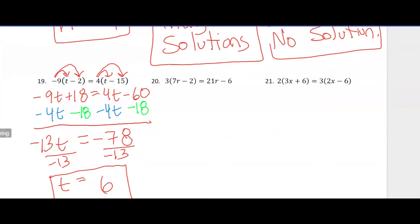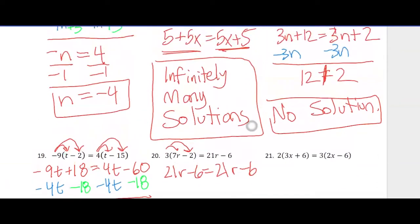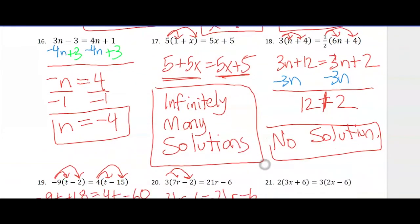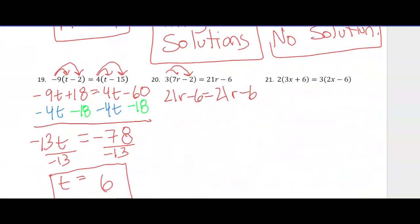Let's do number 20. I'm going to distribute the 3, so we get 21r minus 6 equals 21r minus 6. We've got the same thing on both sides, just like problem 17 where we had 5x plus 5 on both sides. So again, infinitely many solutions.